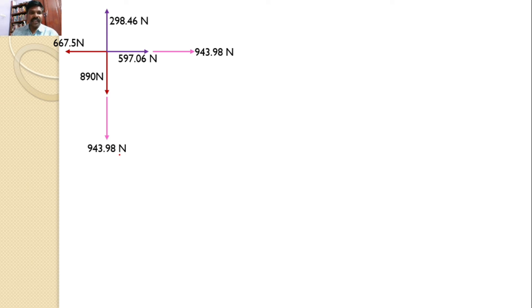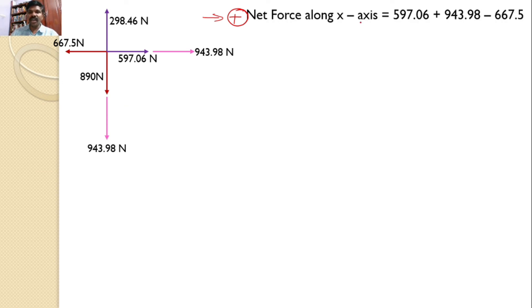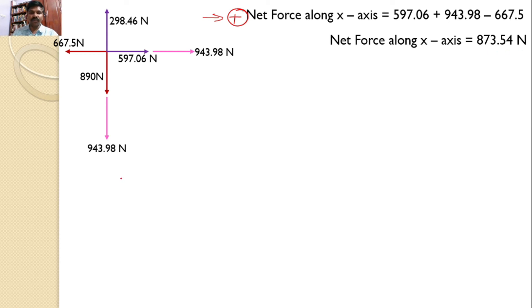Now let us calculate the net force along the X axis. The forces 597.06 and 943.98 Newtons act along the positive X direction (towards the right), while 667.5 Newtons acts towards the left. Hence, the net force along the X axis equals 597.06 + 943.98 − 667.5, which gives 873.54 Newtons.